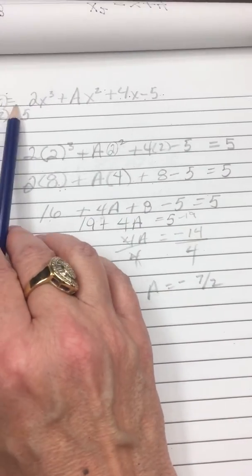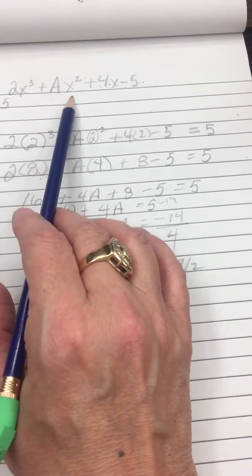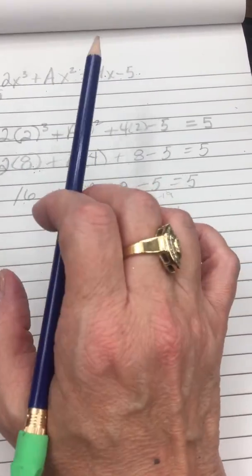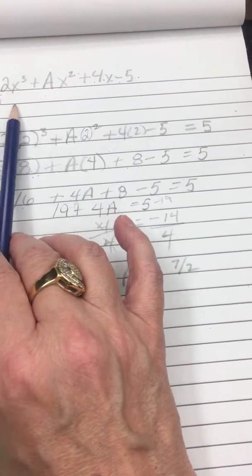Okay, if we have F of X is equal to 2X³ plus AX² plus 4X minus 5, and if F of 2 is equal to 5...